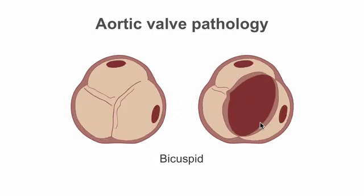As well as acquired aortic valve disease, CT is also useful at looking at congenital abnormalities of the aortic valve. In this example, we can see its use in looking at a congenitally bicuspid aortic valve. Note the fusion of the two valve leaflets, giving rise to a characteristic opening pattern which is similar to the appearance of a rugby ball during systole.